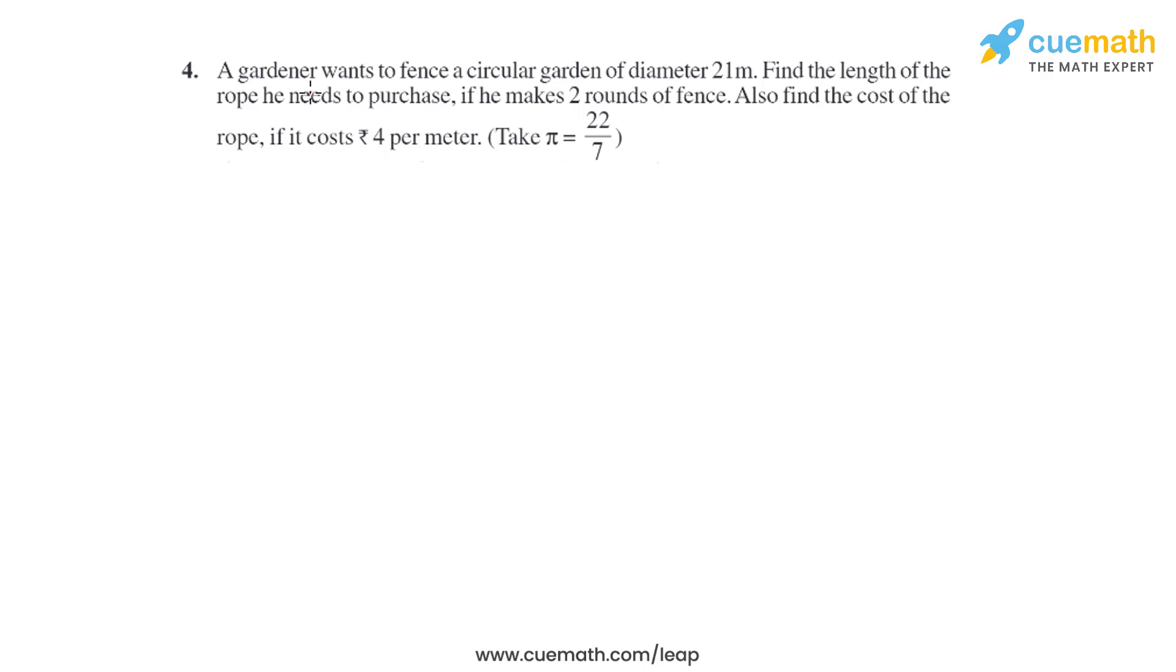Question 4 of this exercise says a gardener wants to fence a circular garden of diameter 21 meters. Find the length of rope he needs to purchase if he makes two rounds of fence. Also find the cost of the rope if it costs 4 rupees per meter.